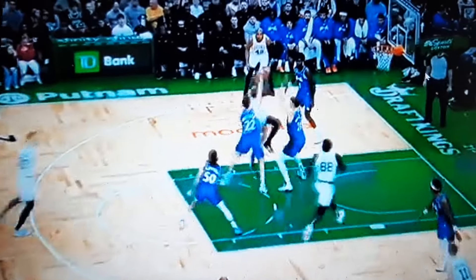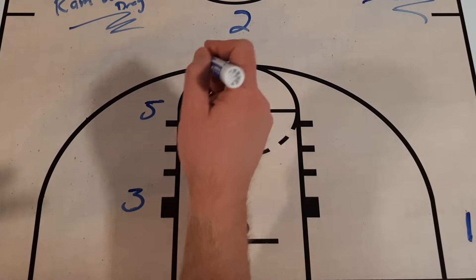Let's take a look one more time at full speed: Brown rejects the ball screen, crosses over, and finishes in the paint with the left hand.